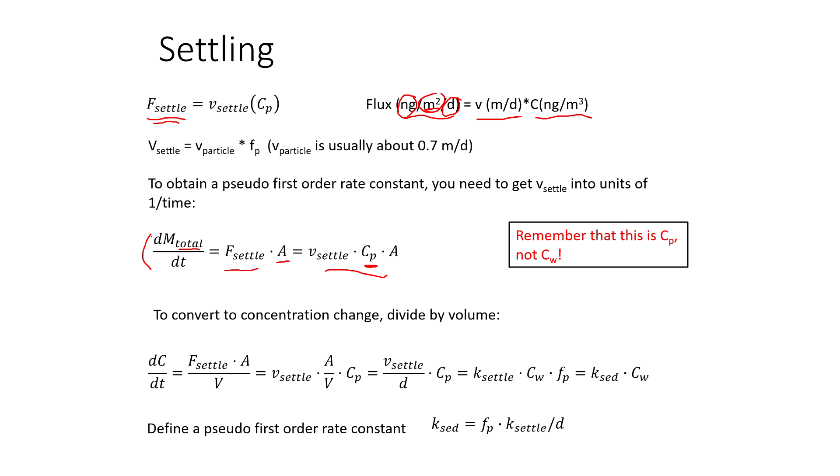So if instead of dm/dt, we write dc/dt, then we just take all this and divide it by volume here. And area over volume is depth, 1 over depth. So we get our depth here. So now if we took V_settle, which has units of meters per day, and divide it by depth with units of meters, we get 1 over day. This thing has units of 1 over day, which, yep, you guessed it, those are the units of a first order rate process, a K, a rate constant. So we're going to call that K_settle.